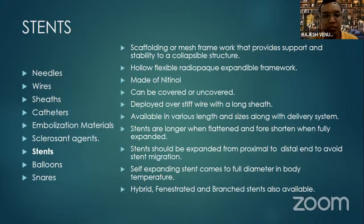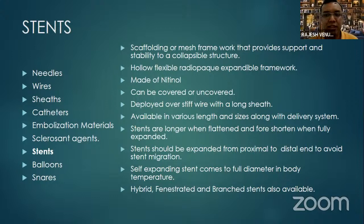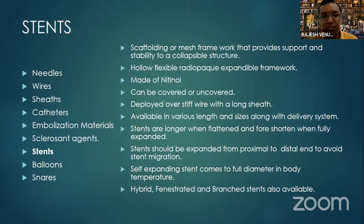For balloon-expandable stents, expansion should proceed from proximal to distal; expanding distal to proximal causes stent migration. Self-expanding metal stents expand to their full diameter upon contact with body temperature — that is a key property. Based on morphology, stents are classified as hybrid stents, fenestrated stents, and branch stents. Fenestrated stents have holes to allow blood passage into branch vessels. Branch stents are used for aortic interventions where the aorta divides — you have a main stent and two branch stents.